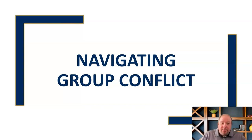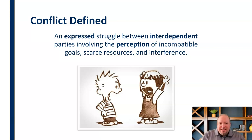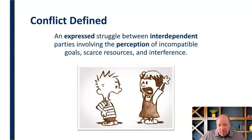Before we talk about managing conflict, let's define it. Conflict is an expressed struggle between interdependent parties involving the perception of incompatible goals, scarce resources, and/or interference. Conflict is an expressed struggle, meaning it's known by both people — not just one person having an issue. Conflict is when both people are aware of the issue and it's been expressed.